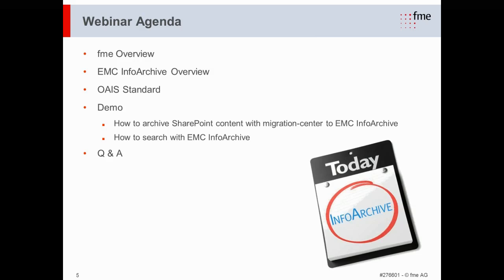What we'll cover today: first, a short overview about FME — what we are and what we do. After that, a brief explanation of InfoArchive for those who've never heard of it. The second topic is OAIS, a standard implemented in InfoArchive. Then the main topic: a demo of how to archive content from SharePoint to EMC InfoArchive with the Migration Center, how to search archived information, plus some technical details and a Q&A session.